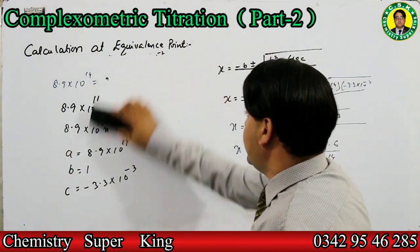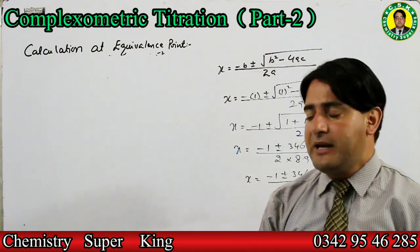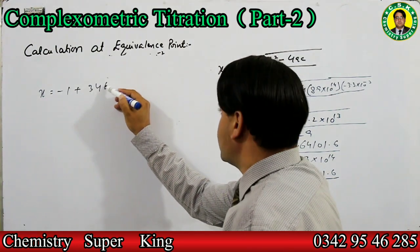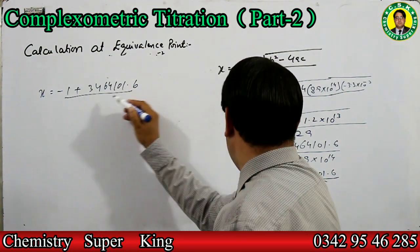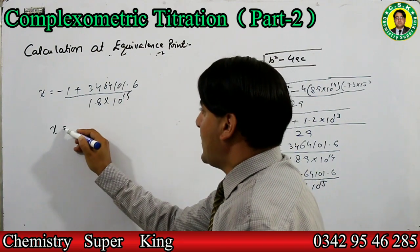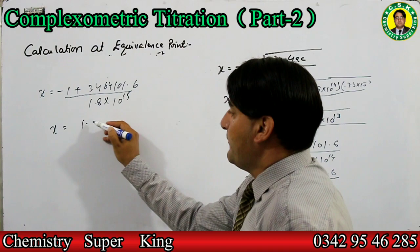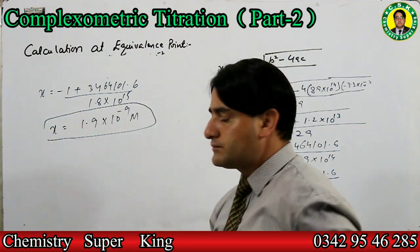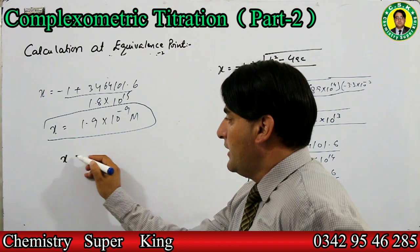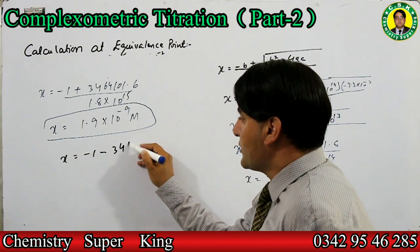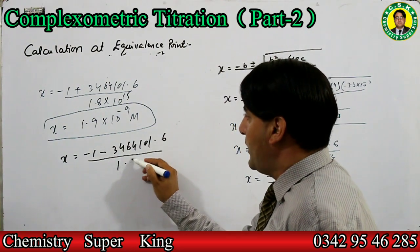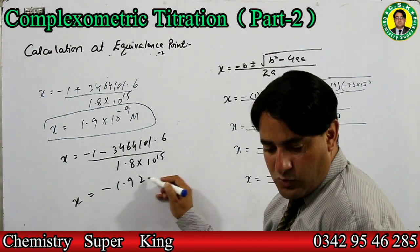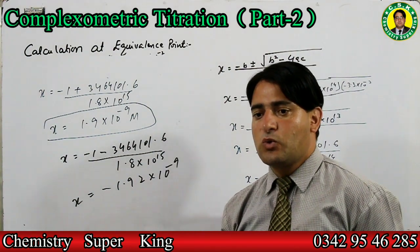تو x کی correct value ہے 1.9×10⁻⁹۔ Cadmium ion کی concentration جو complex کی dissociation سے بنی = x = 1.9×10⁻⁹ molar۔